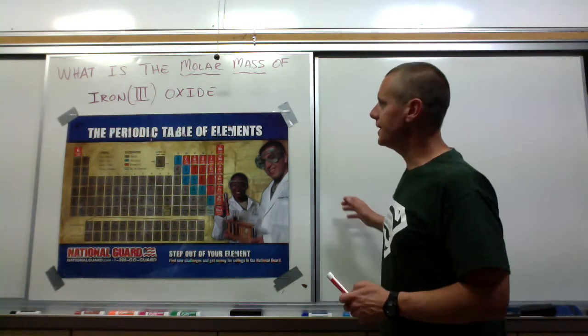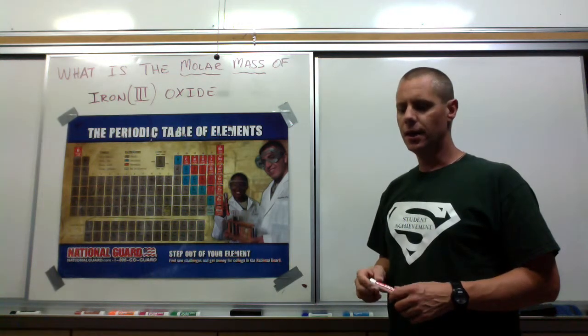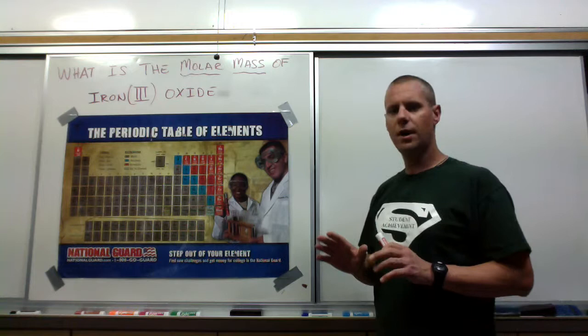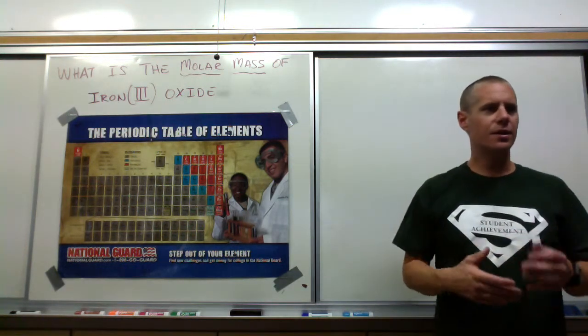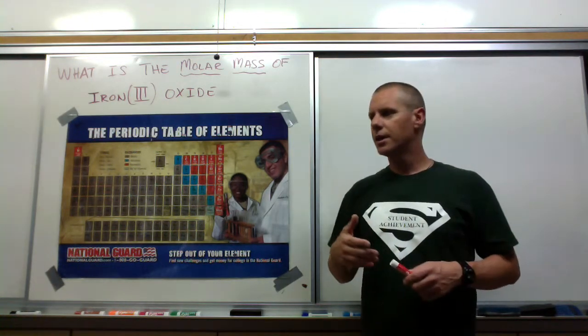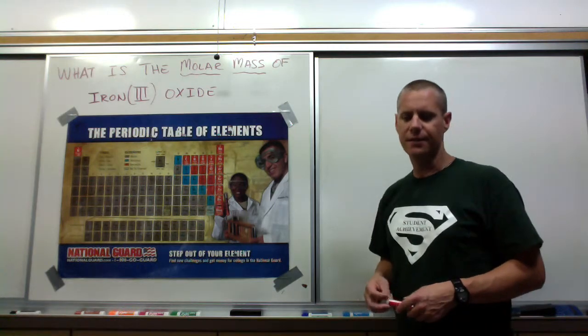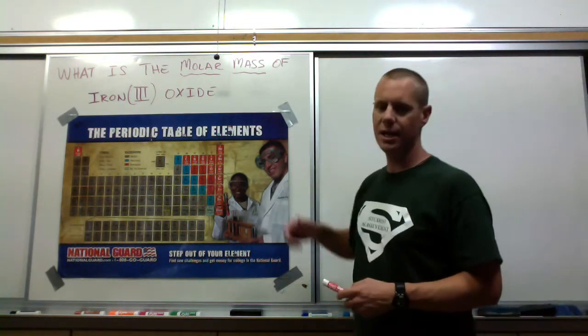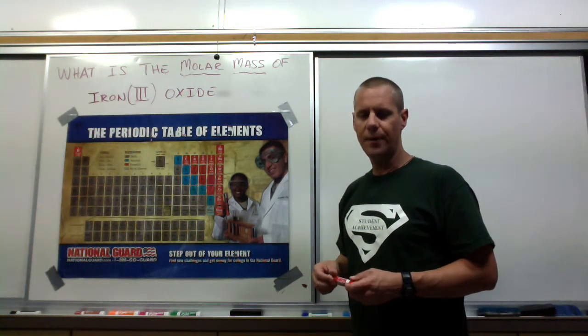What we're looking at is iron oxide, and we need to know how many grams per mole you would find for iron oxide, which is different for all compounds because all compounds have different kinds of atoms. Every time you go to the periodic table, every atom has a different number of protons, so every atom has a different atomic mass. Atomic mass is something that's unique to each atom, and so molar mass is something that's unique to each compound.